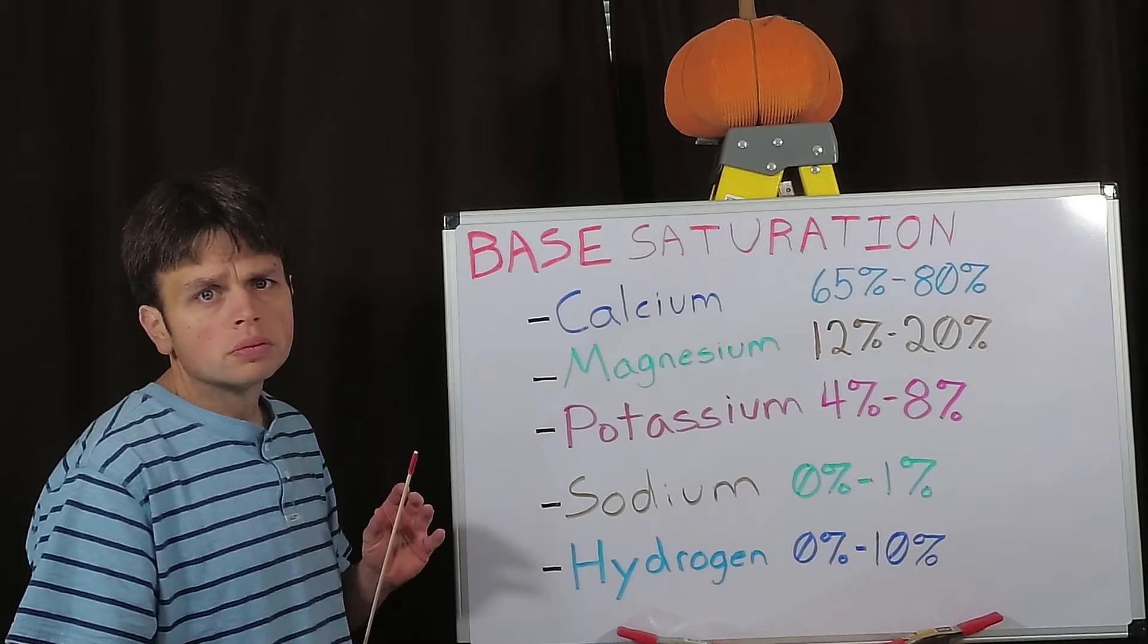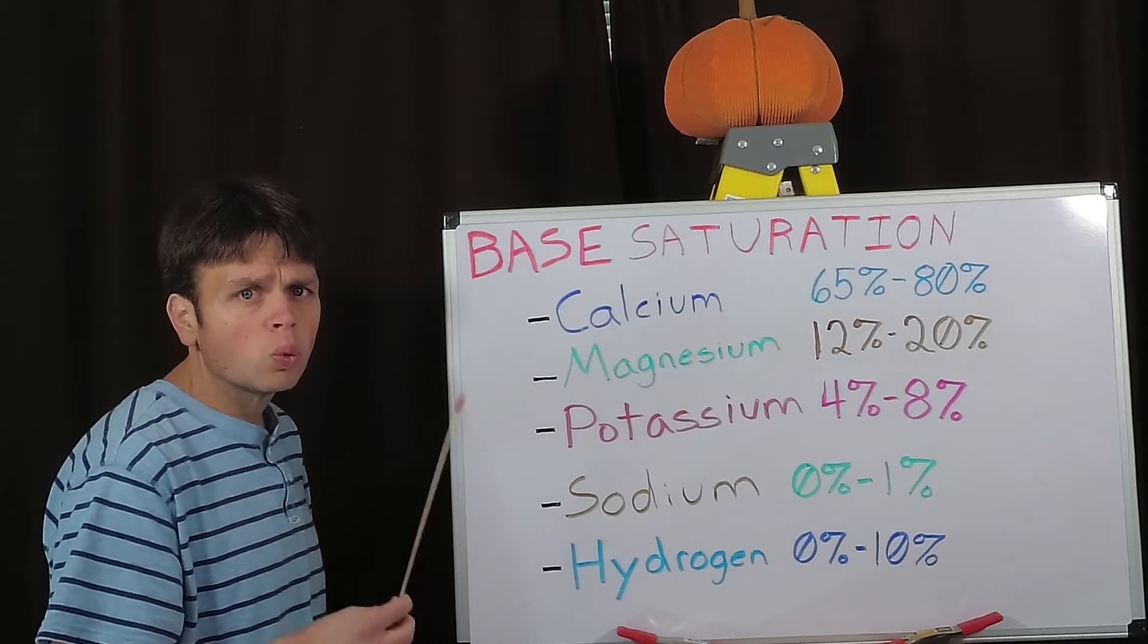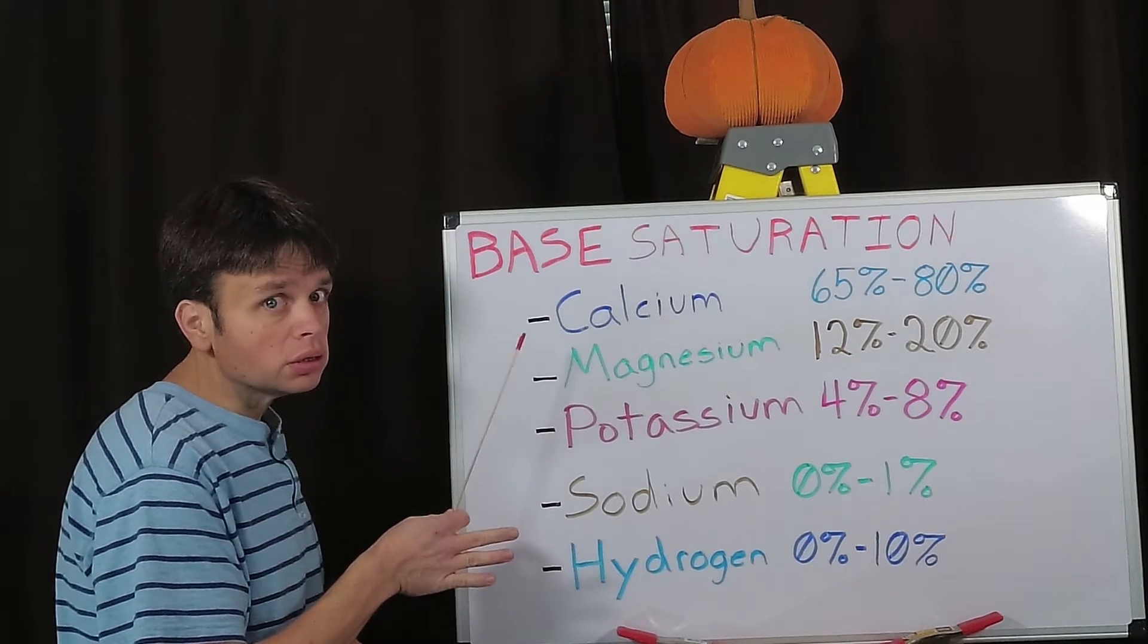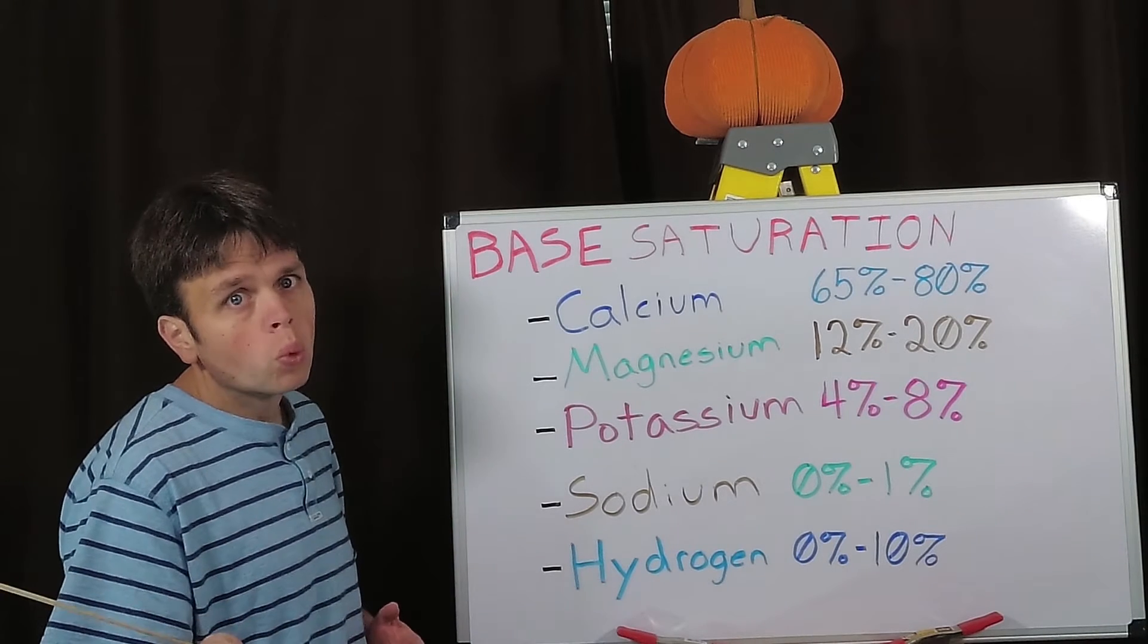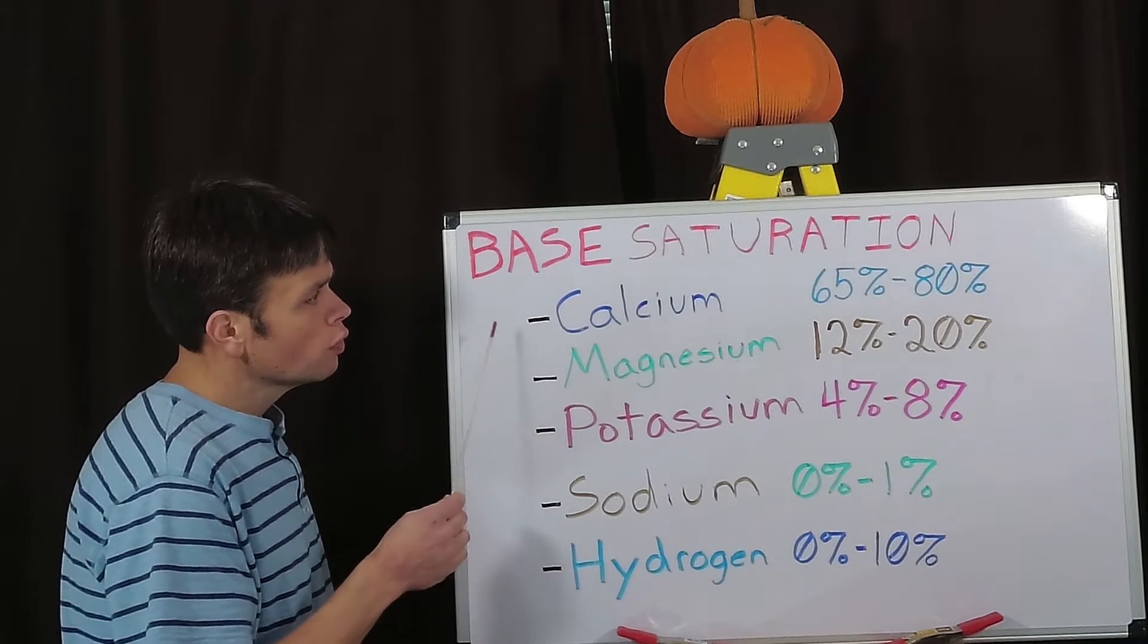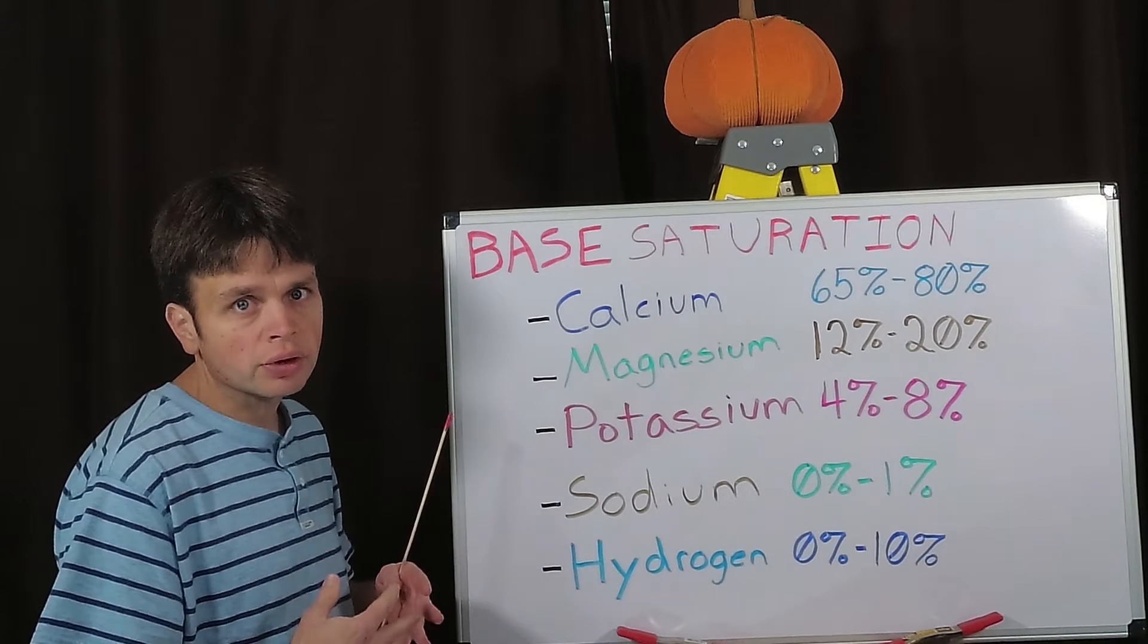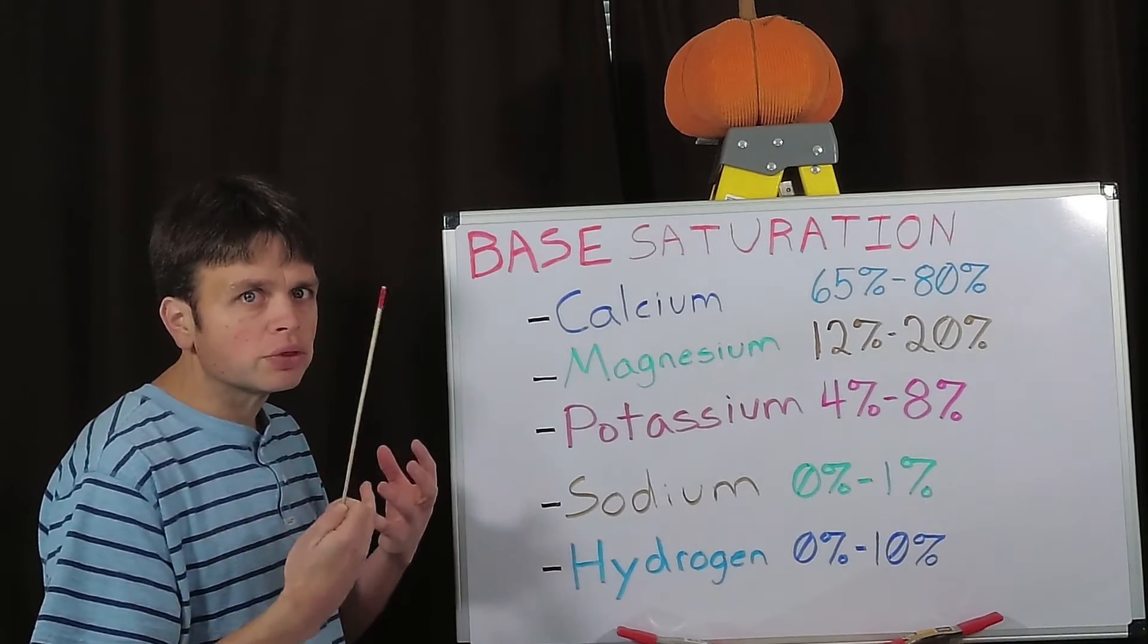So we're going to break down each of these five and what they do to your soil when you have them balanced and what they do when they're out of balance. First let's tackle calcium and magnesium because they kind of go together, like clay and sand.